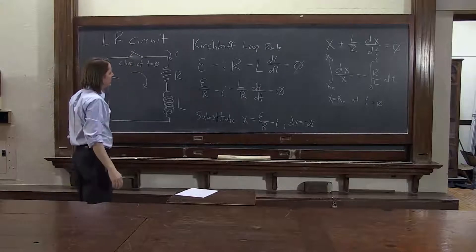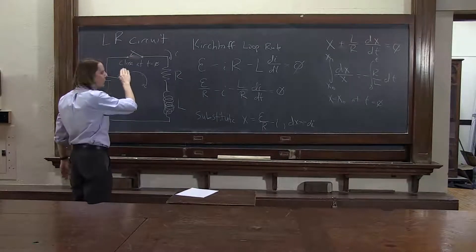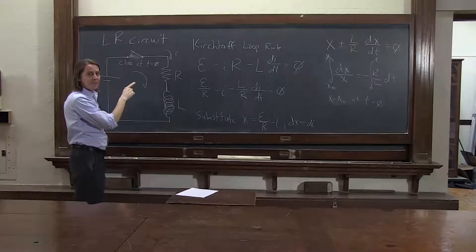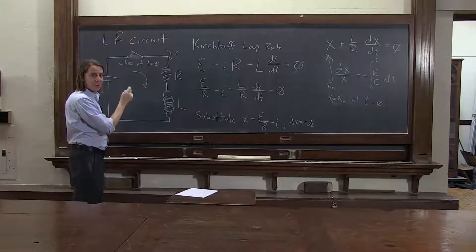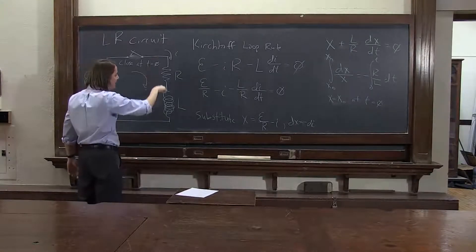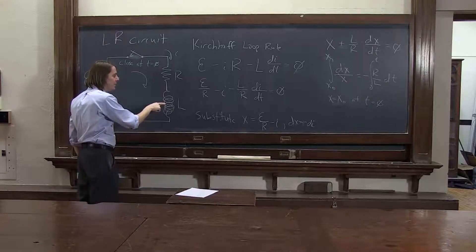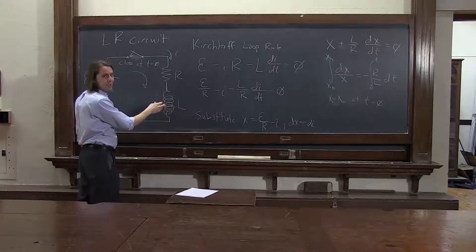When you close the switch, the current is 0, but it starts to grow very fast. The di-dt is very big, right, when you close the circuit. So since the di-dt is big, the db-dt is big. You have a big changing magnetic field, so the back emf is really big.